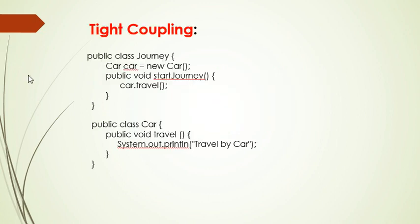You can see the code for tight coupling. Here I have given a class Journey. In the class Journey, I am mentioning and creating the object for Car class by using the new operator, and I am using one method start journey.